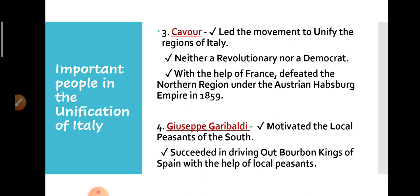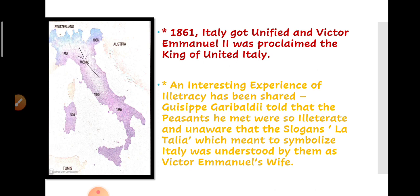The last person we talk about is Giuseppe Garibaldi — do not confuse him with the first person, Giuseppe Mazzini. In 1860, Garibaldi marched to the southern part of Italy and, with the help of local peasants whom he motivated, they together won over the Bourbon King of Spain and drove the Spanish rulers out of Italy. Finally, in 1861, Italy got unified and King Victor Emmanuel II was proclaimed the king of unified Italy.